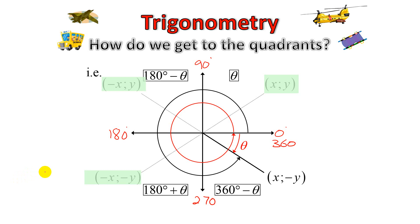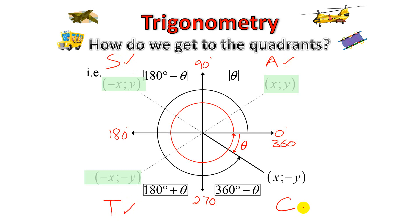Remember from your CAST diagram: A is for all, S is for sine, T for tan, and C for cos. So all ratios in quadrant 1 are positive. In quadrant 2, only sine is positive. In quadrant 3, tan is positive. And in quadrant 4, cos is positive.